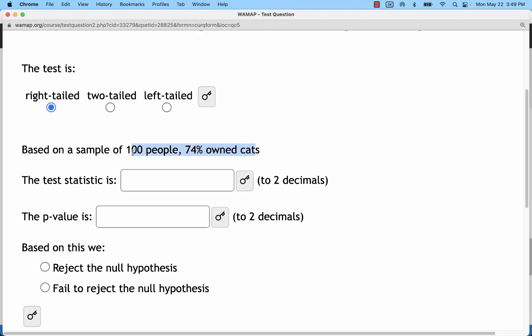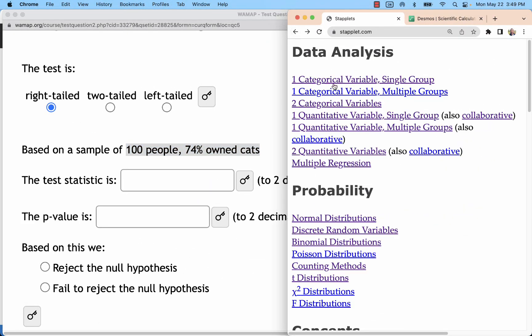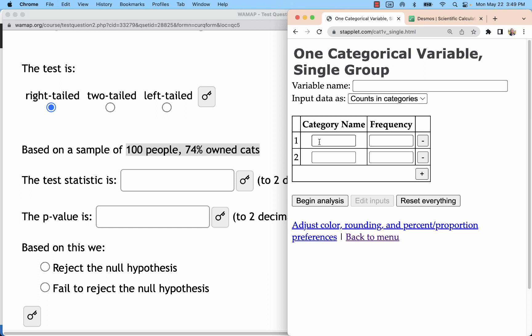Now, on this problem, I wanted to show you how to do it, because it is slightly different. Here, we have 100 people, 74% owned cats. When I go to stat blip, I'm going to have to turn those into numbers. So, for one categorical variable, single group, I have owned cats and didn't own cats. Maybe they do now, but at the time, they didn't.